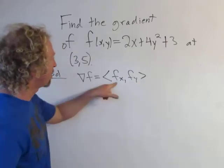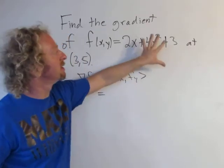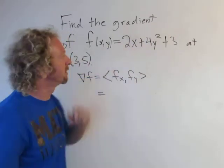So in this case the partial with respect to x is simply 2 because all of the other variables, in particular y, are constant. So all of this is 0 when you take the derivative. So you just get 2.